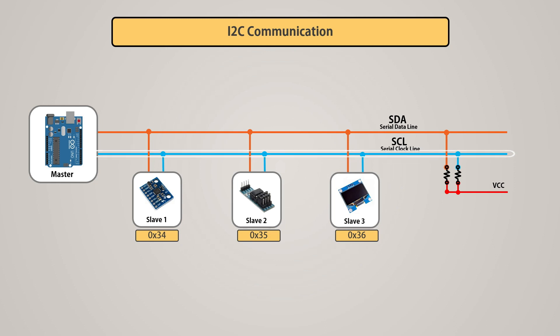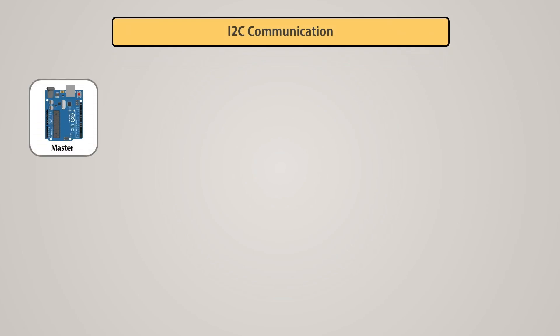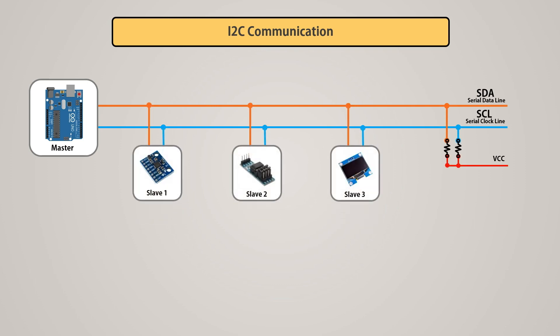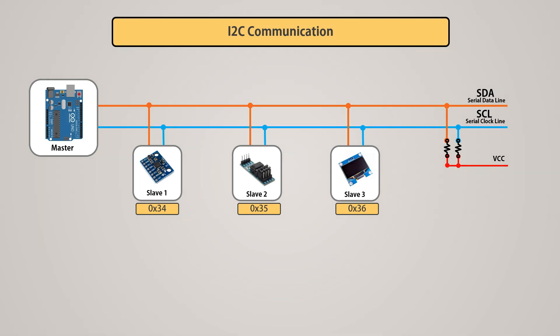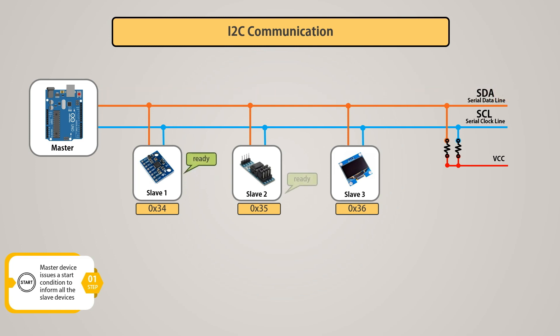The master generates clock pulses on the SCL line, and the slave devices latch the data on the falling edge of the clock pulse. In the I2C protocol, a number of slave devices are connected to the master device via the I2C bus, wherein each slave has a unique address. The master device first issues a start condition to inform all slave devices so that they listen to the serial data line.